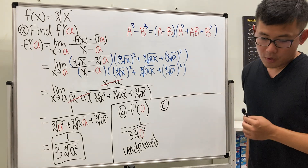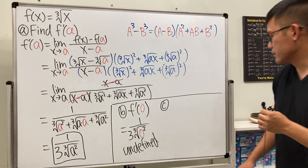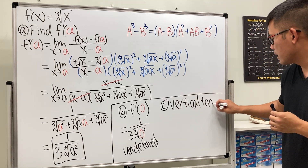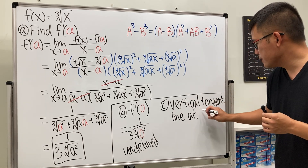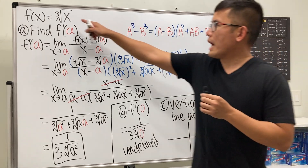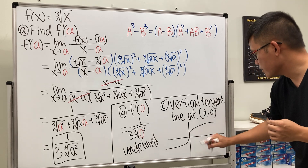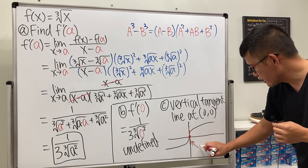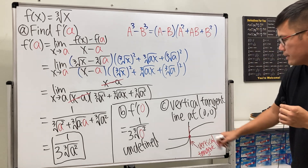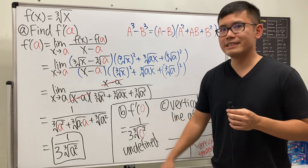For part c, we show that the cube root of x has a vertical tangent line at the point zero comma zero. If we graph the cube root of x, it goes straight up through the origin and curves out on both sides, clearly showing a vertical tangent line at zero zero. The slope of any vertical line is undefined, which is consistent with the derivative not existing at x equals zero.